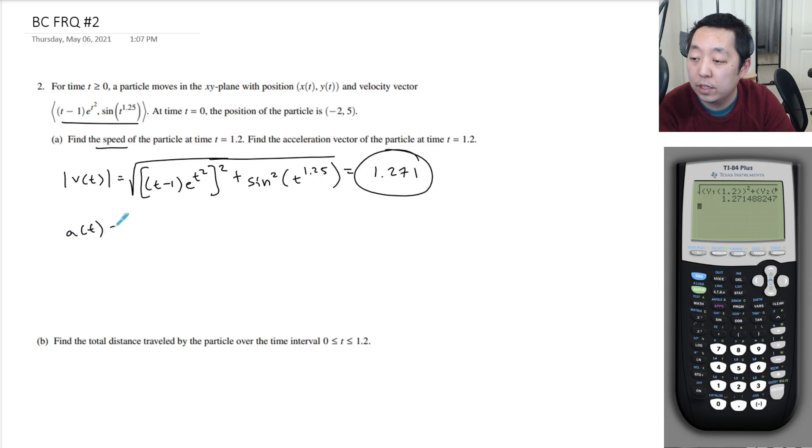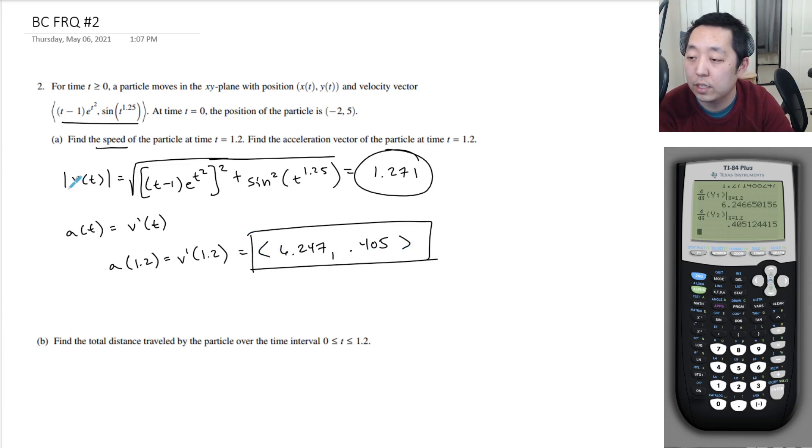And then the acceleration vector is just the derivative of the velocity vector. And so we want the acceleration vector at 1.2, which is the velocity vector at 1.2. So we just need to compute the derivatives of y1 and y2. So nth derivative with respect to x, y1 function, this is the x component, evaluate at 1.2. That's 6.247, comma. Let's do the same derivative again. It's kind of annoying to plug it in, but we just simply do that just to be familiar with the calculator. We have them all plugged in for the next part, 0.405. So that's the acceleration vector.